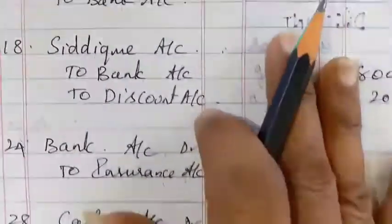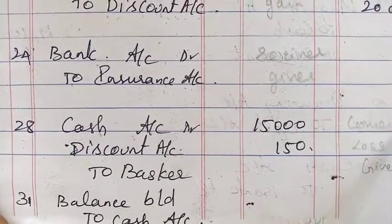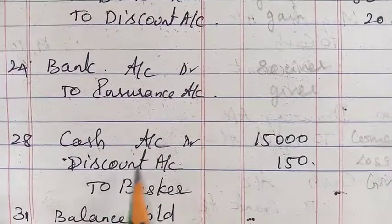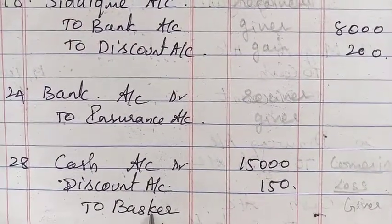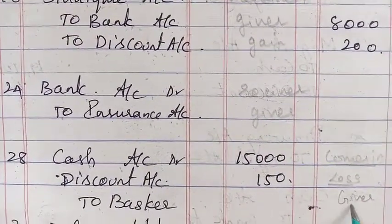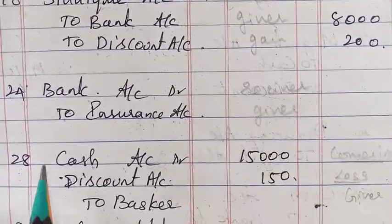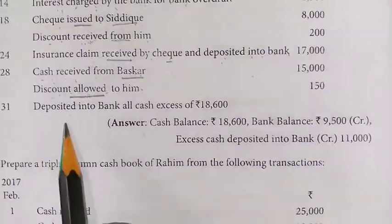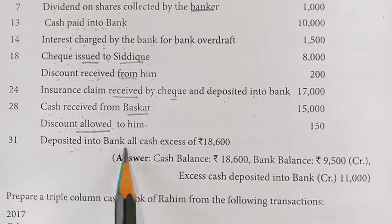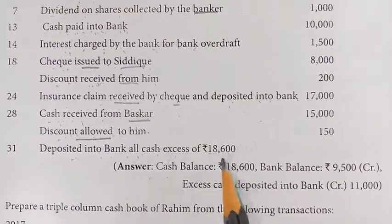Cash account debit — cash is coming in. Discount allowed to Baska is a loss, so Baska is the giver — it will come on the credit side. It will come in both the debit and credit sides. Last one: deposit into the bank — all excess cash of 18,000.